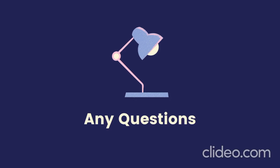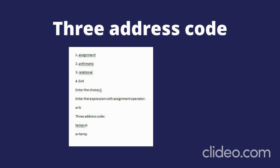And then three-address code. For example, 'A = B' — there is a three-address code where Temp equals B, then A equals Temp. So direct assignment is not done in three-address code. There is a temporary variable which stores the value, and then we replace that value into the given variable.